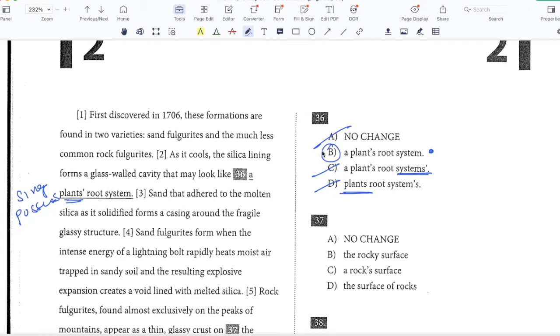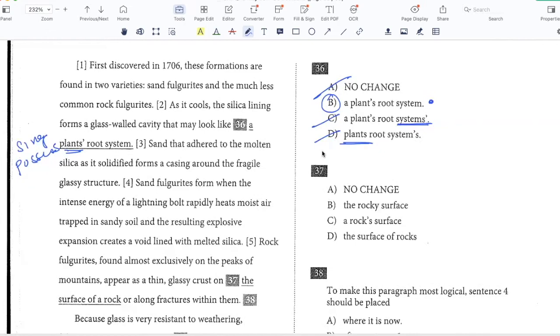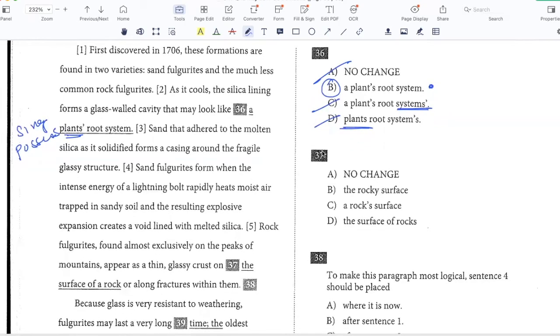Sand that adhere to the molten silica as it solidified forms a casing around the fragile glassy structure. Sand fulgurites form when the intense energy of a lightning bolt rapidly heats moist air trapped in sandy soil and the resulting explosive expansion creates a void lined with melted silica. Rock fulgurites found almost exclusively on the peaks of mountains appear as a thin glassy crust on the surface of a rock or along fractures within them.